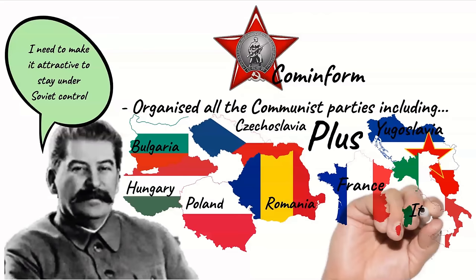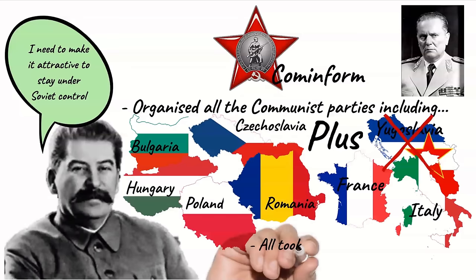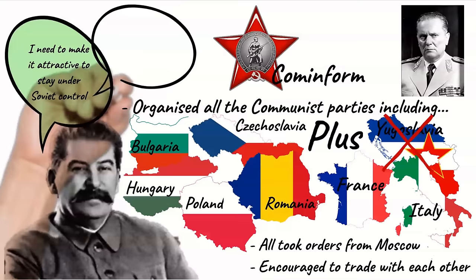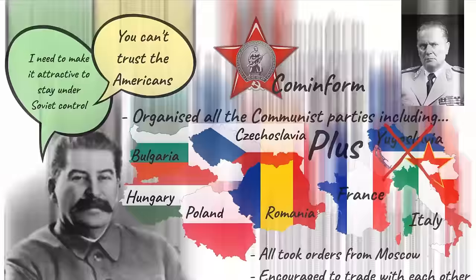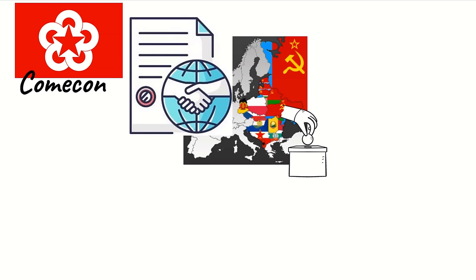However, tensions between Tito of Yugoslavia and Stalin caused Yugoslavia to be expelled from Cominform in 1948. The agreement made sure that the governments in the satellite states took their orders from Moscow and the parties were encouraged to trade with each other rather than non-communist countries. Stalin also took the opportunity at Cominform meetings to spread anti-US propaganda. Comecon strengthened the trade links between the Cominform countries and aimed to provide financial aid in line with communist principles, which would prevent Soviet-led countries joining the Marshall Plan.